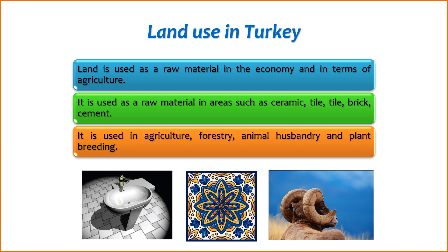4. Environmental conservation — Protected areas. Some land is designated as protected areas, nature reserves, or national parks to conserve biodiversity, protect ecosystems, and provide habitats for wildlife. These areas contribute to environmental conservation and support ecotourism.